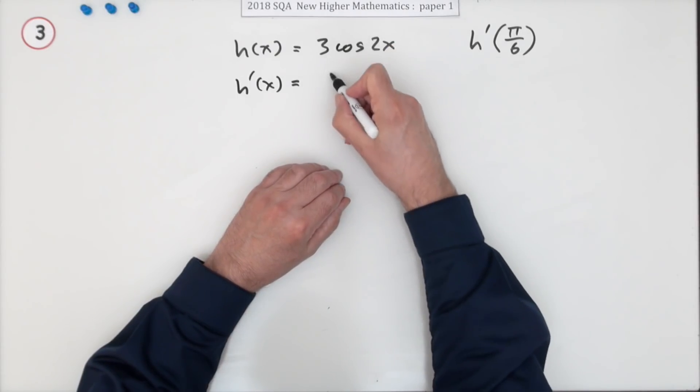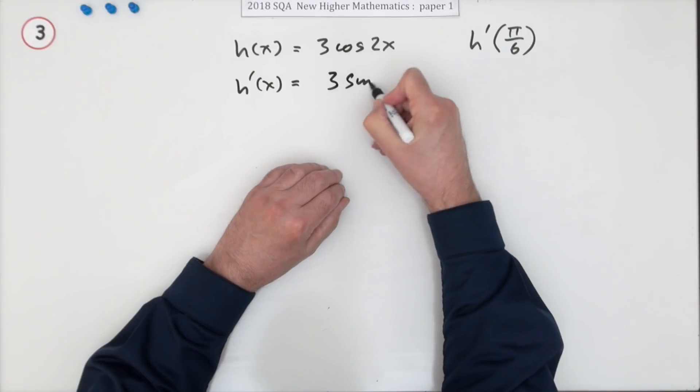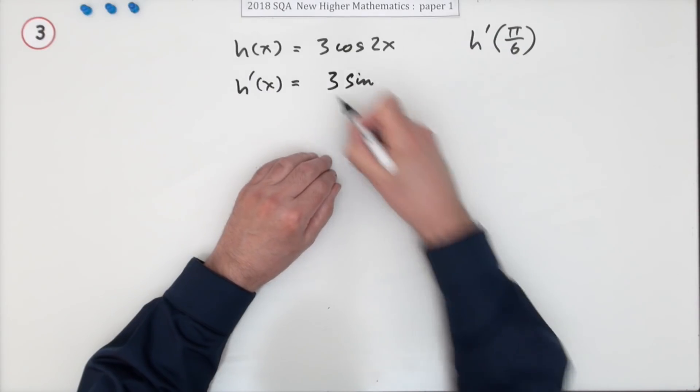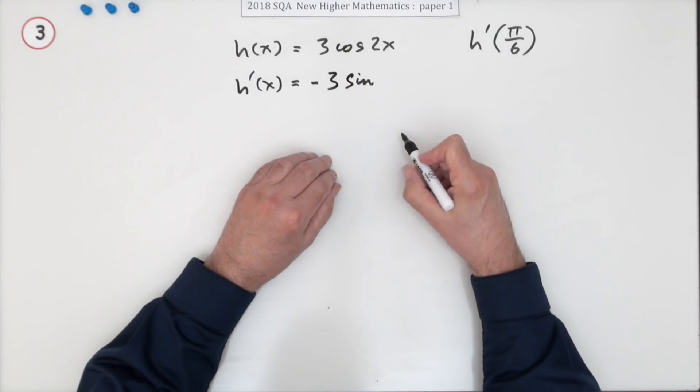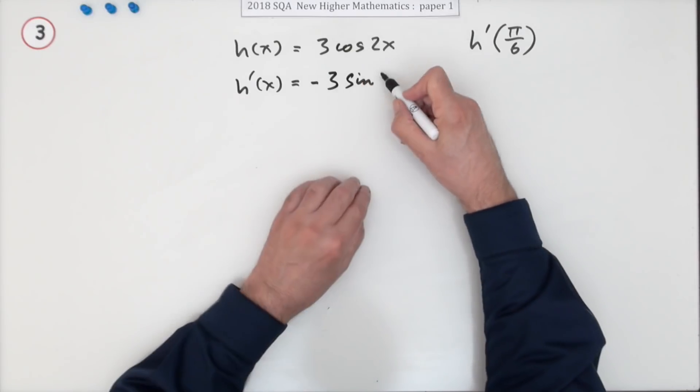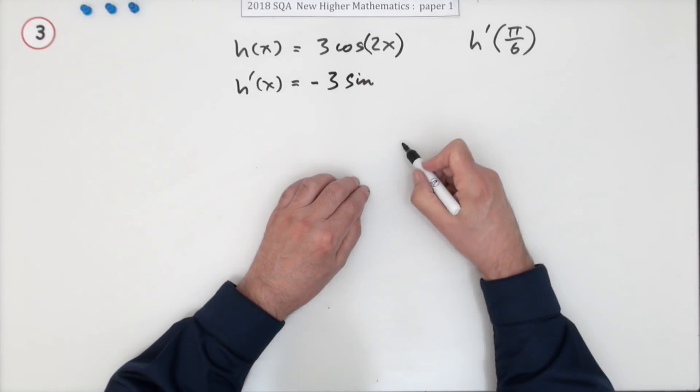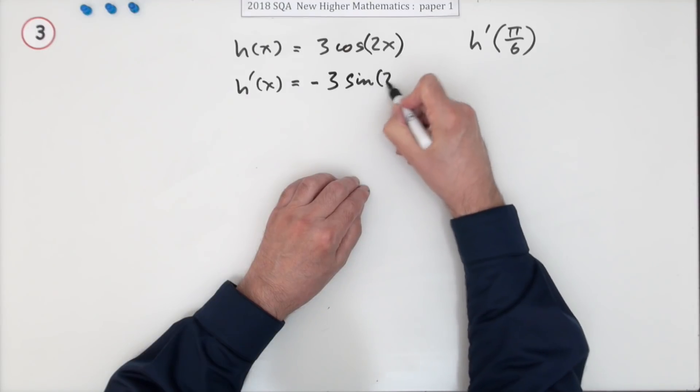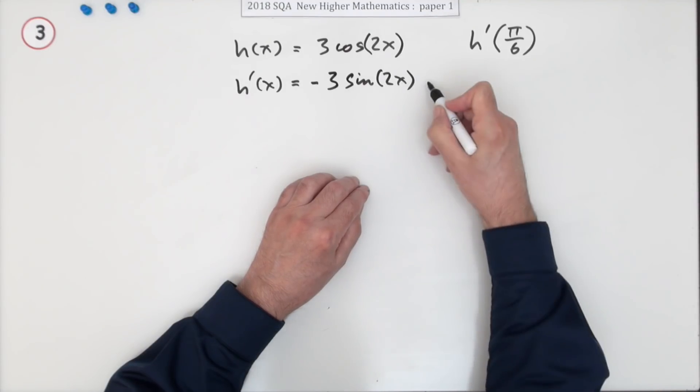Now the coefficient makes no difference. Cos goes to the negative of sine, so don't forget that negative. But it's not just operating on x, it's operating on 2x, so that will stay 2x. You now need to multiply it all by the inner derivative.